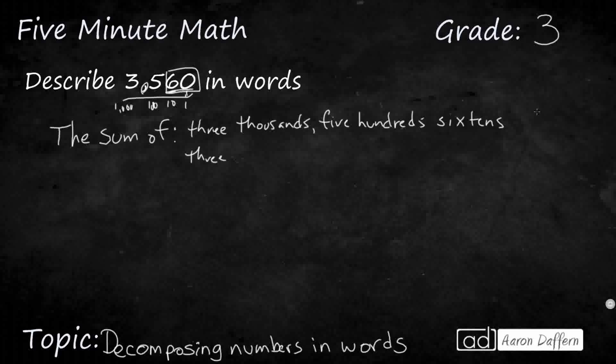So we could say it's the sum of 3 thousands still. We could say it's still 5 hundreds. But we could now say, instead of 6 tens, we could say it's the sum of 60 ones. Because 6 tens is the same as 60 ones. If I were to draw 10 rods right here, 6 of them, we know that each of these can be broken down into 10 ones. So 10, 20, 30, 40, 50, 60.